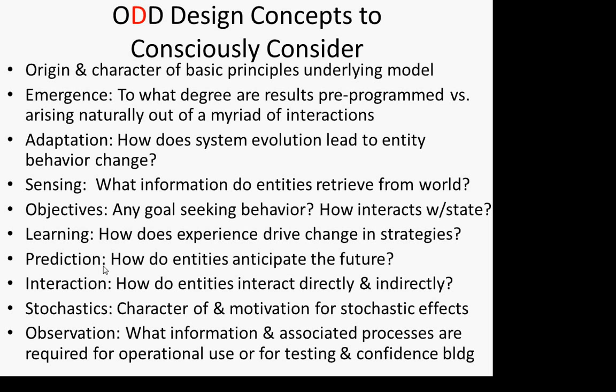The first of them is really emphasized within agent-based modeling — and that's the issue of emergence. To what degree are the results we're seeking to observe arising naturally out of a myriad of interactions between agents over time, and to what degree are these pre-programmed? Within agent-based modeling, there's a conviction that wherever you can, you should aspire to capturing phenomena as emergent behavior rather than programming it into the model.